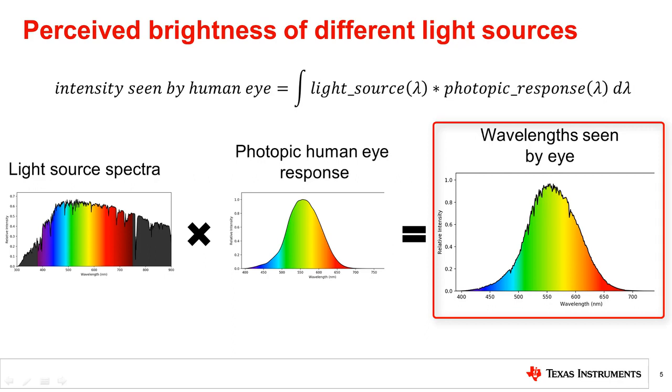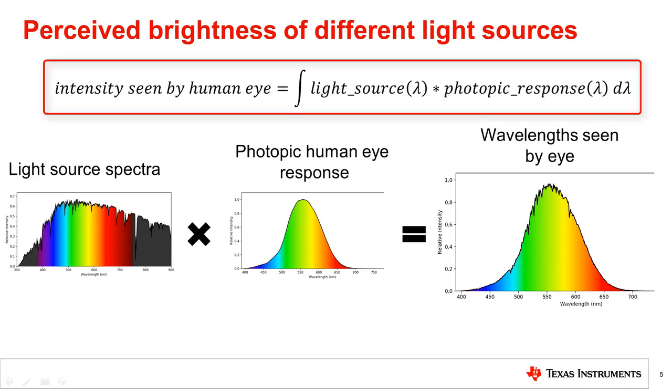We see this done below with sunlight. We can also see how certain parts of the light source spectrum are diminished or completely rejected by the human eye response and other parts are enhanced. By integrating this to get the area under the curve, we obtain a single value which is correlated with the intensity seen by the human eye.